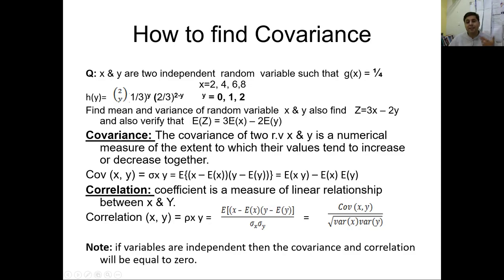Independent means their probability will not be depending on one another. For example, a specific student's height and his or her hair color — the height and hair color or skin color have no dependency on one another. That is why these two variables will be independent. Two variables will be treated as independent variables when their event probability is not depending on one another.